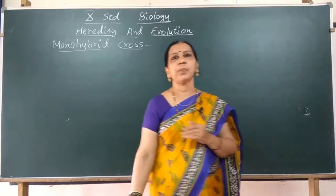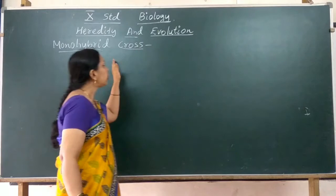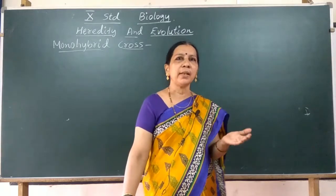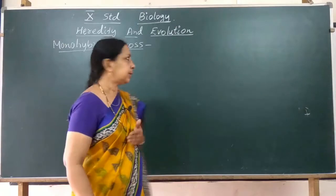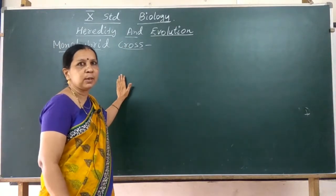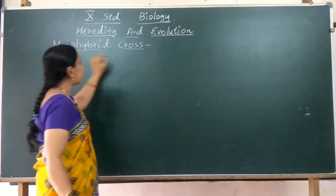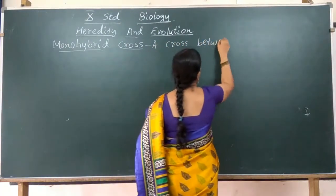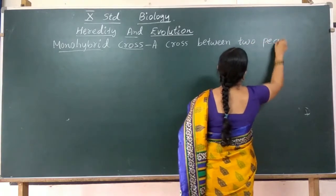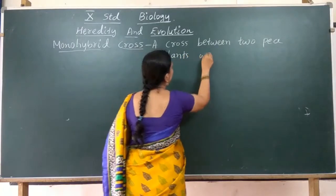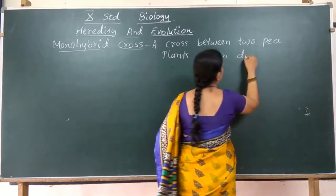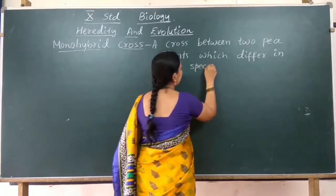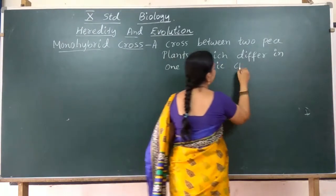So many contrasting forms of characters are available in garden pea plants, and that is why he selected garden pea plants for his experiments. Now let us look into the monohybrid cross experiments — how traits are expressed, what is a dominant trait, and what is a recessive trait. The law of dominance is explained by this monohybrid cross experiment. A monohybrid cross is a cross between two pea plants which differ in one specific trait or character.